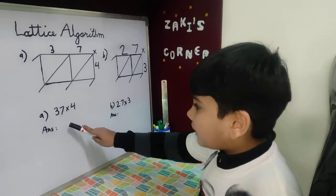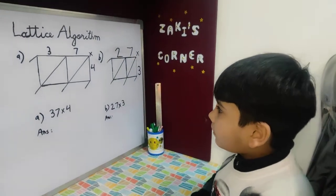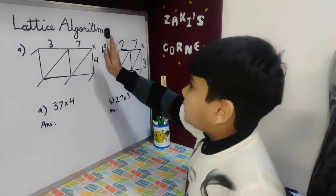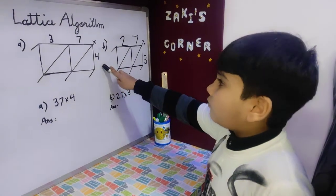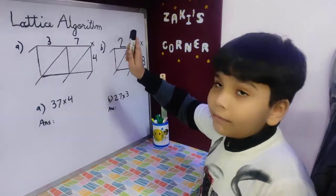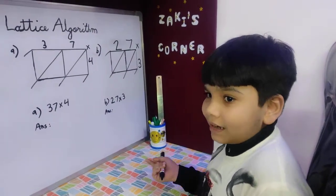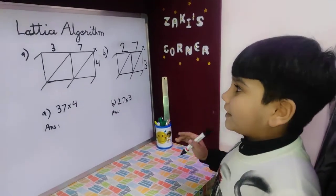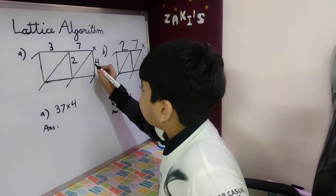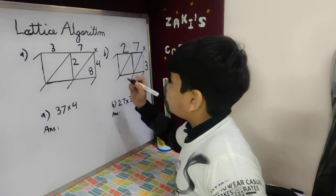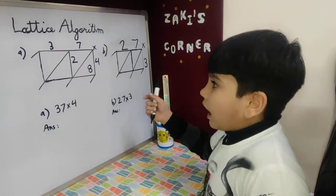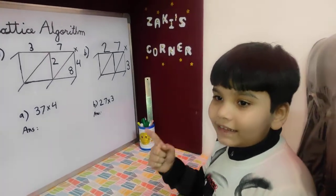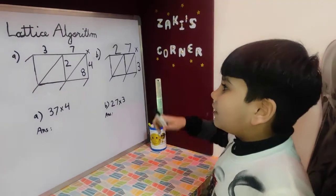Example number one: 37 multiply by 4. Very first, we will multiply seven — seven times four, meaning four sevens. How much will four sevens be? I think you got it — four sevens are 28. Now, how much is four times three, meaning four threes? I think you got it again, friends — four threes are 12.